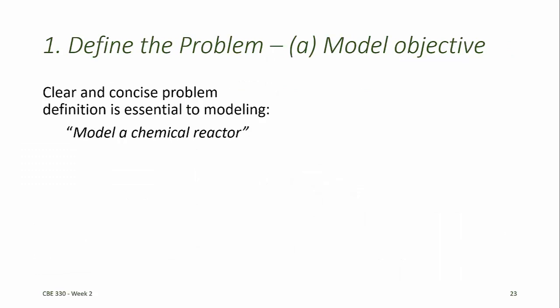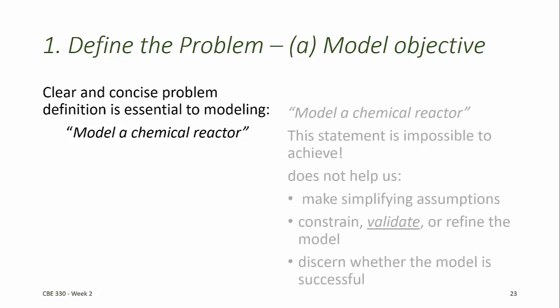The first step to mathematical modeling of any chemical and biological process is to define a clear modeling objective. The model objective should be concise and it should tell us how the model is going to be used. For example, if we were to say model a chemical reactor is our modeling objective,